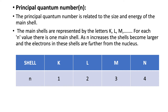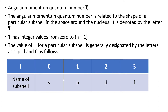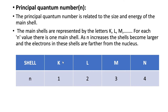As the value of N increases, the shells become larger and the electrons in these shells are farther from the nucleus. For example, when N=1 the shell is represented by K; N=2 is L; N=3 is M; and N=4 is N. So K is the first shell, L is the second, M is the third, and N is the fourth shell.